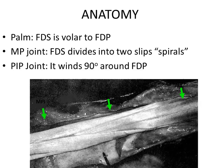The FDP then continues, now superficial to the FDS at the level of the midshaft of the proximal phalanx, and goes to be inserted into the terminal phalanx. The region where the FDP and FDS are together — from the level of the metacarpal head right up to the base of the middle phalanx — is called zone 2, or no man's land.